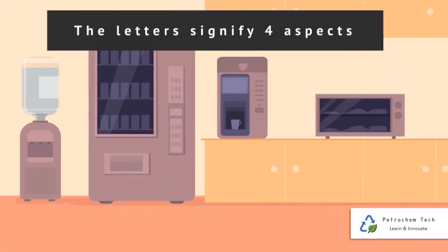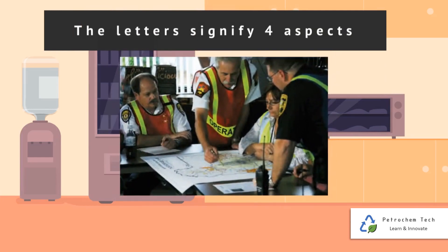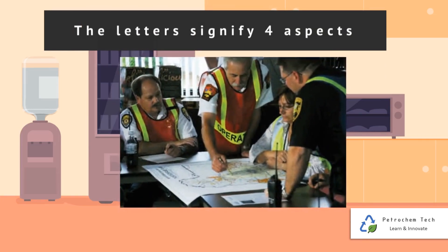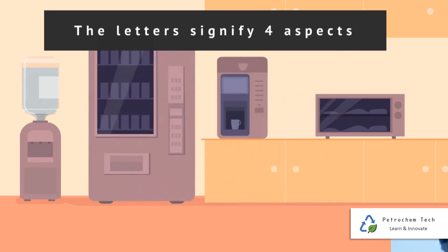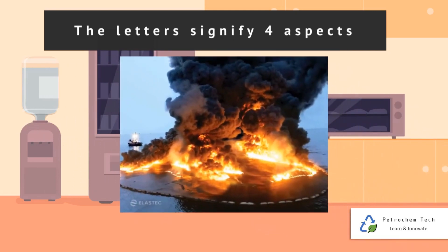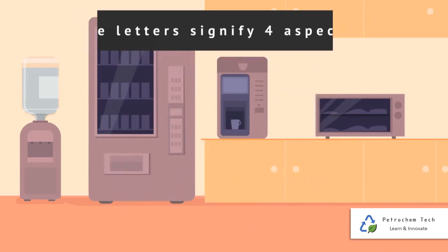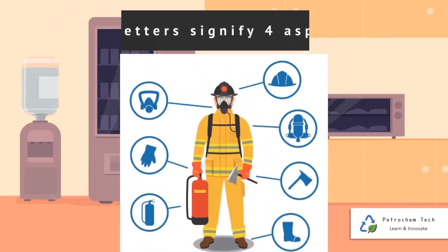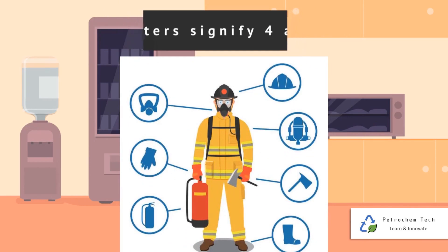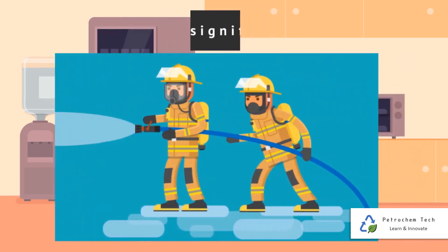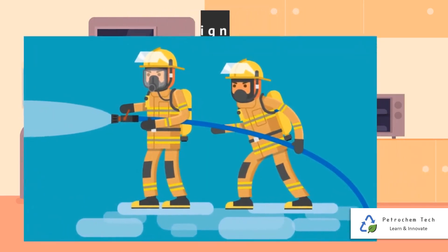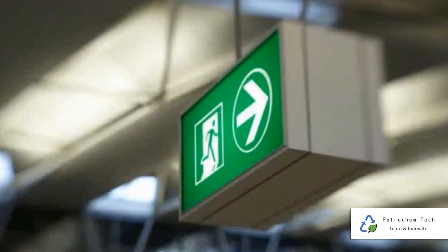The letters signify four aspects: 1 - method of controlling spillage, either by diluting or by containing; 2 - personal protective equipment to be worn by firefighters; 3 - reactive nature of the chemical; 4 - need for evacuation.